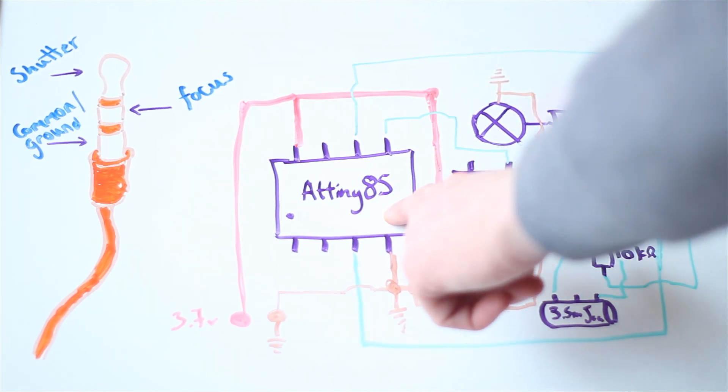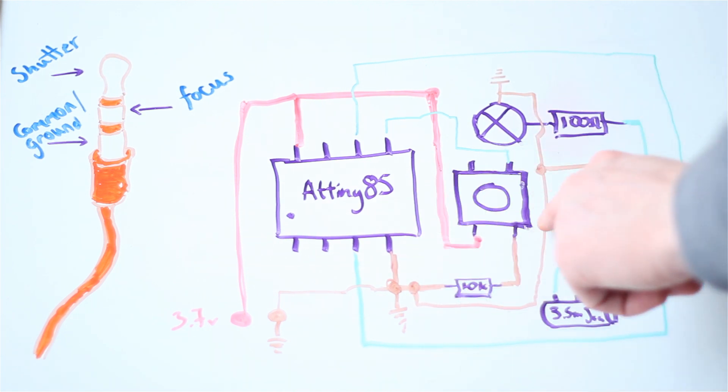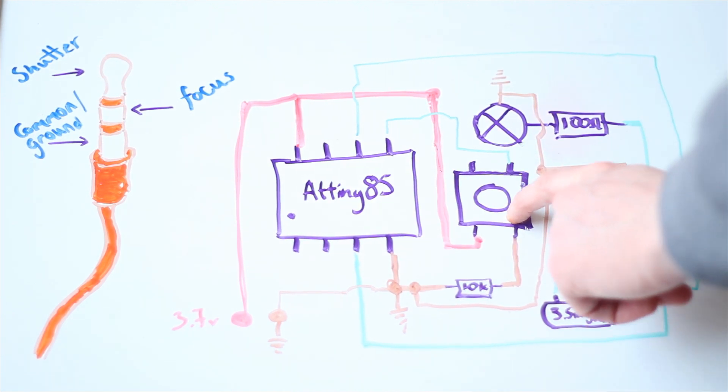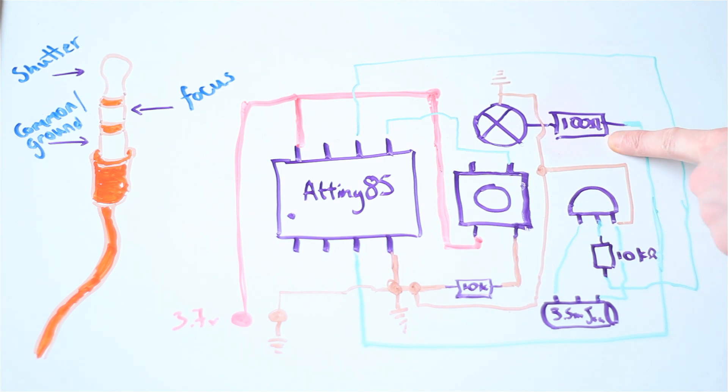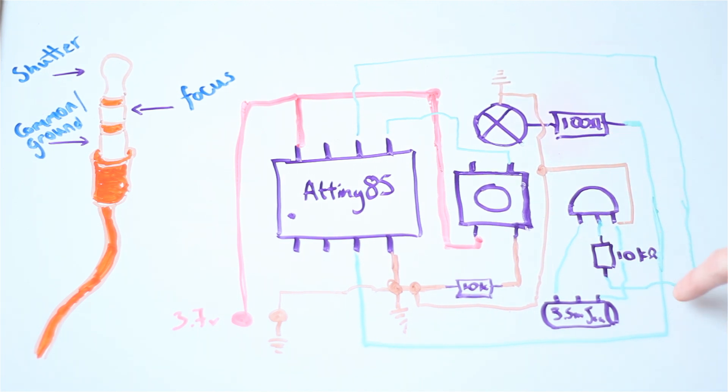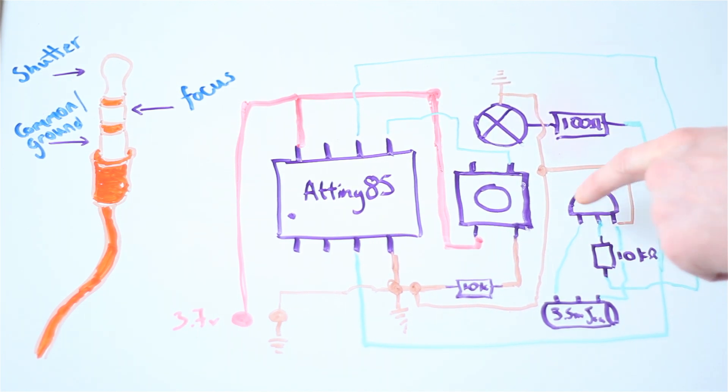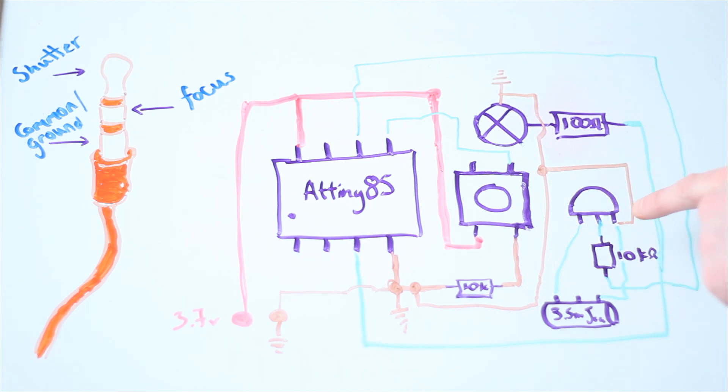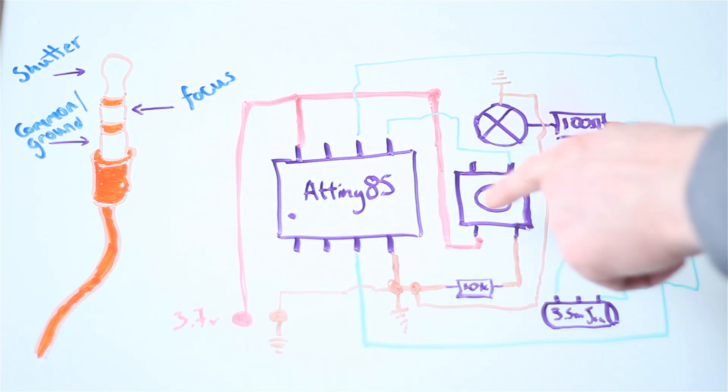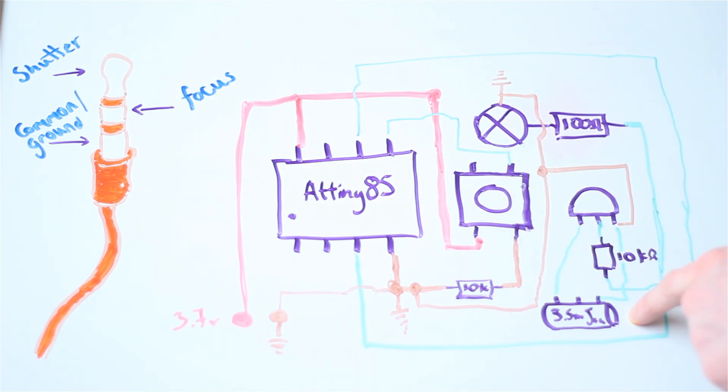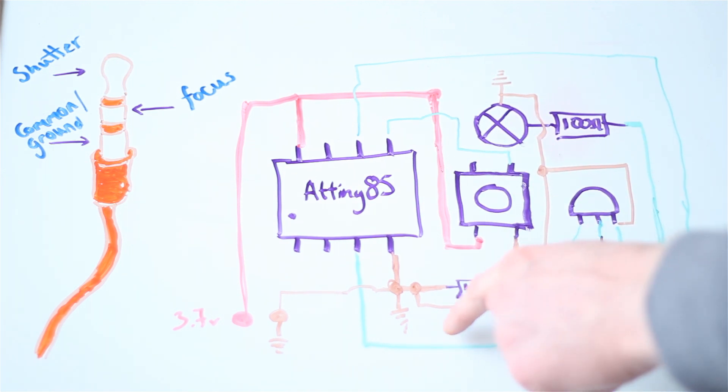So this is our ATtiny85. We've got a push button switch here. That's an LED, believe it or not. We've got a 100 ohm resistor here. This is the transistor. I've got the flat side there so you know which way around it goes. We've got a 10k ohm resistor there that's going to the signal from the ATtiny85. The 3.5mm jack. And then you've got all the various lines there for ground and power.